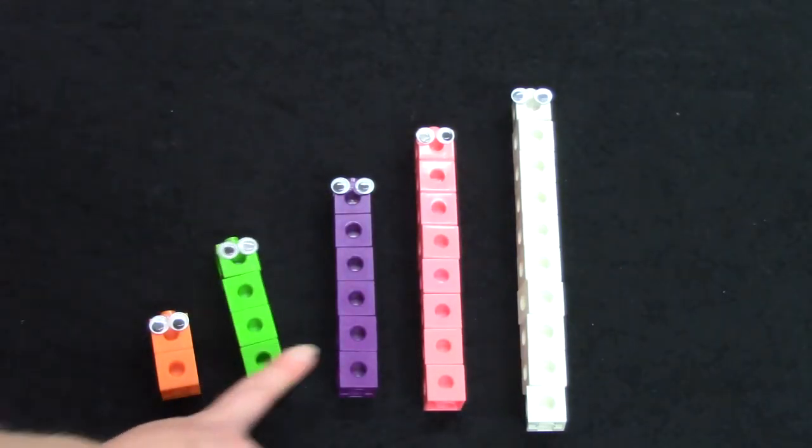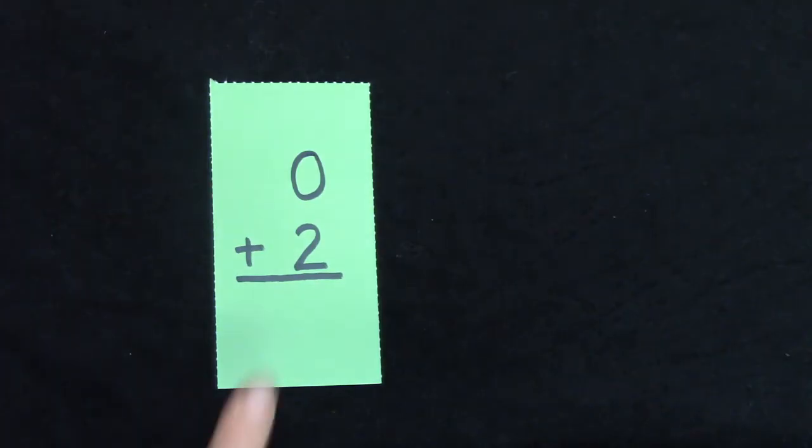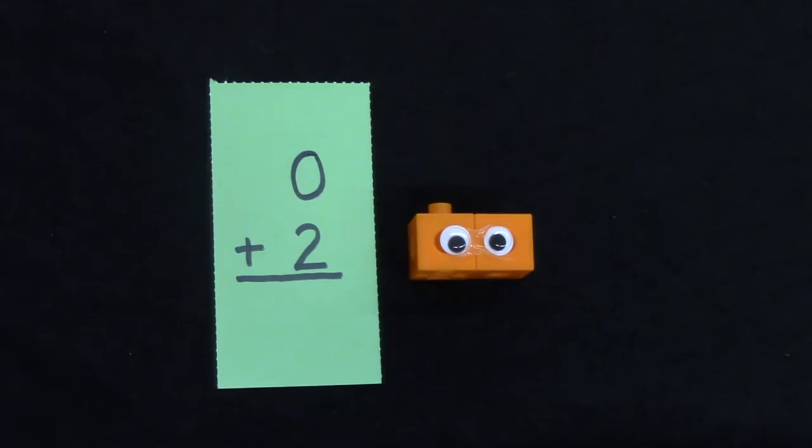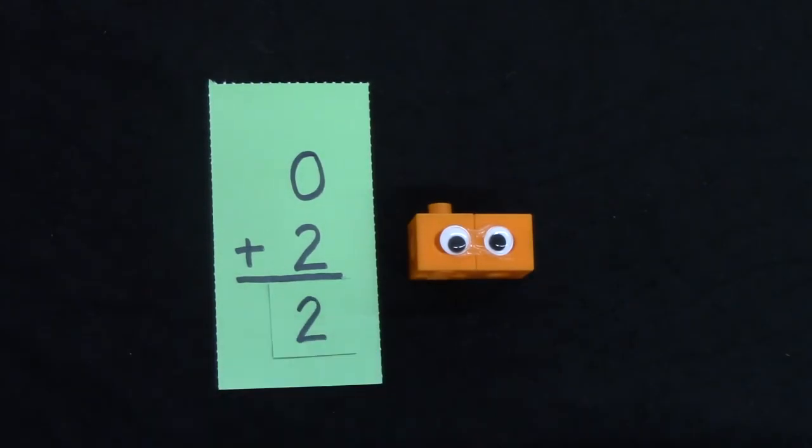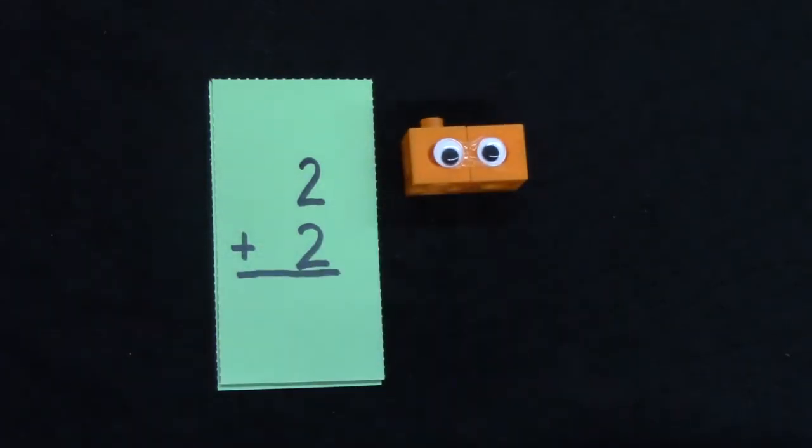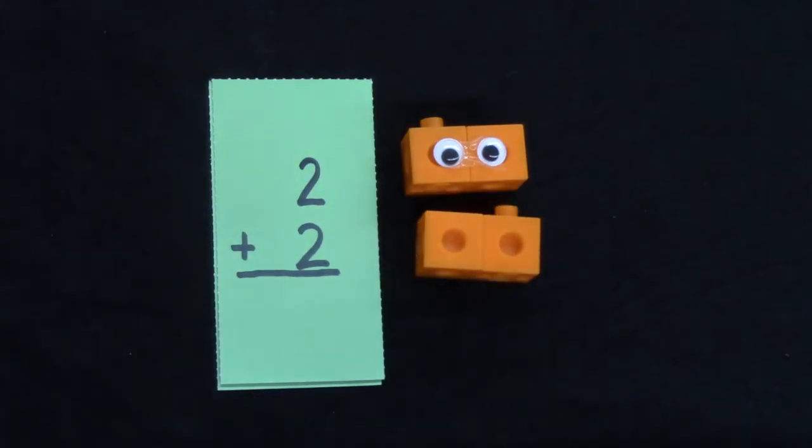2, 4, 6, 8, and 10 are all even numbers. Let's take a look at our flashcards. If we have 0 plus 2, how many snap cubes do we have? You're right. We have 2. If we have 2 snap cubes and we add 2 more, how many do we have? 2 plus 2 is 4.